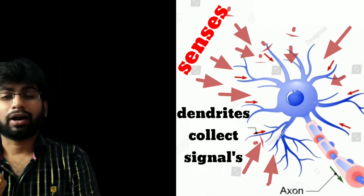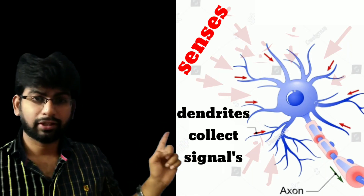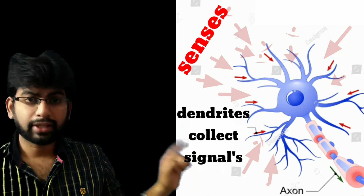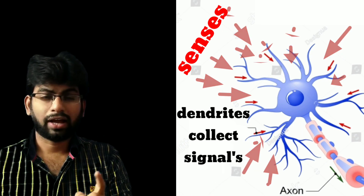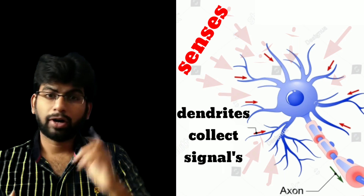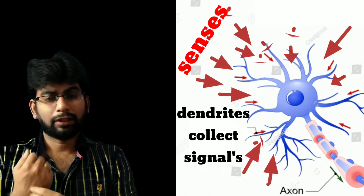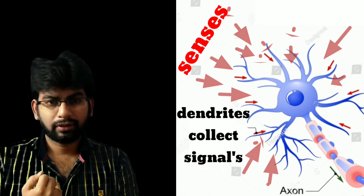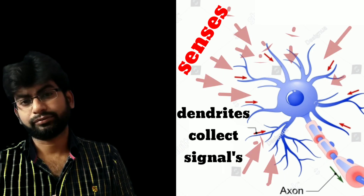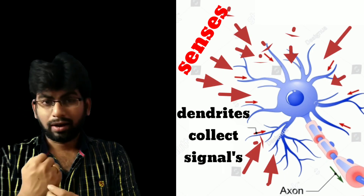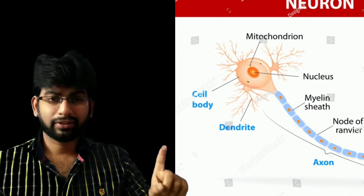The dendrites receive the message from the senses. Why are the nerves — the dendrites — involved? Because the senses transmit signals to the brain through the dendrites.